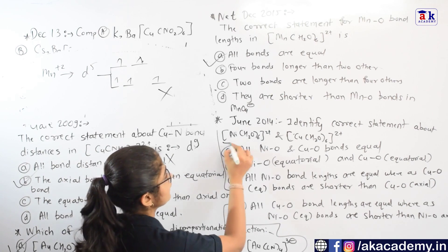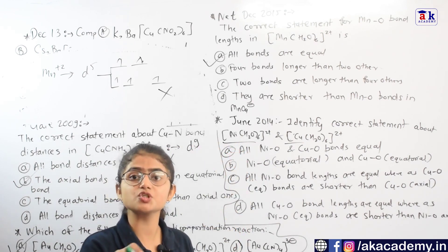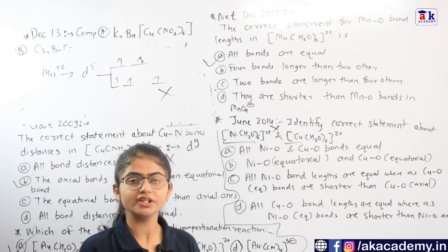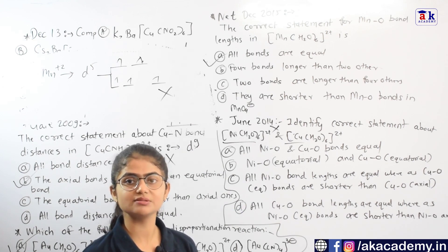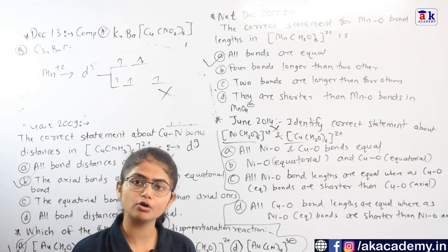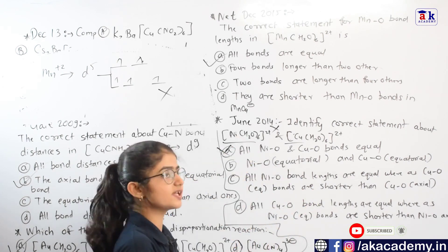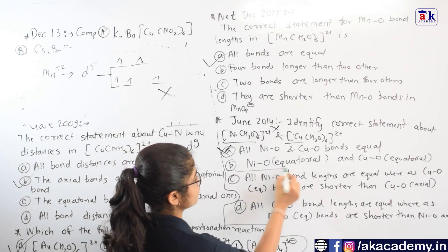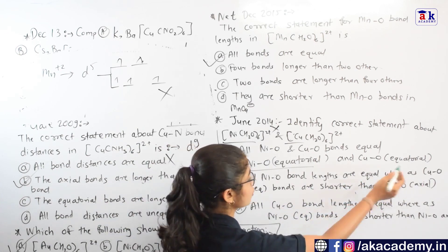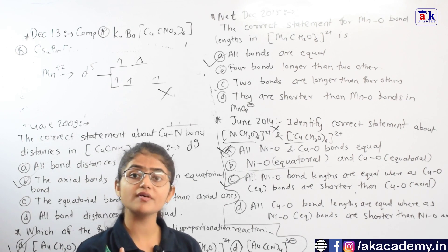In June 2014, the question asks to identify the correct statement about Ni²⁺ and Cu²⁺ complexes. Ni²⁺ is d8, which gives a symmetrical arrangement of electrons — no Jahn-Teller distortion, so all six bonds are equal. Cu²⁺ is d9, so it exhibits JTD, and in most cases elongation occurs, meaning axial bonds are longer and equatorial bonds are shorter. Option C states that all Ni-O bonds are equal but in the Cu complex the equatorial bonds are shorter than axial bonds — this is the correct statement, so option C is the answer.